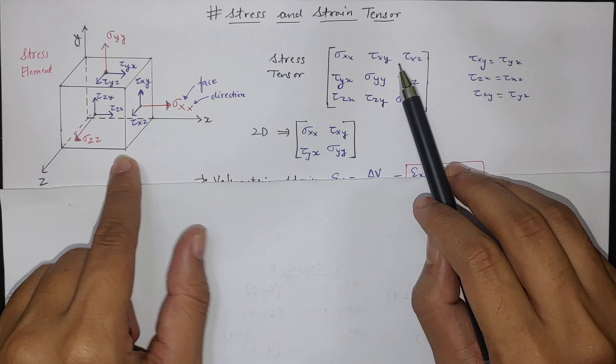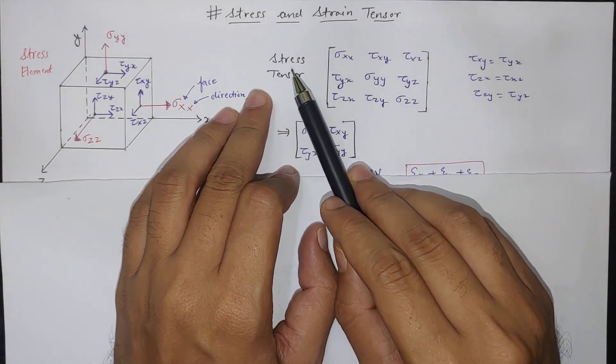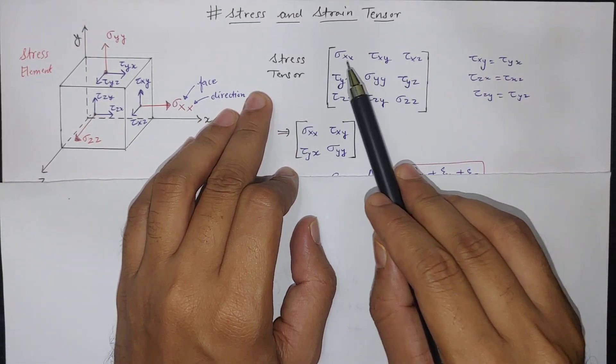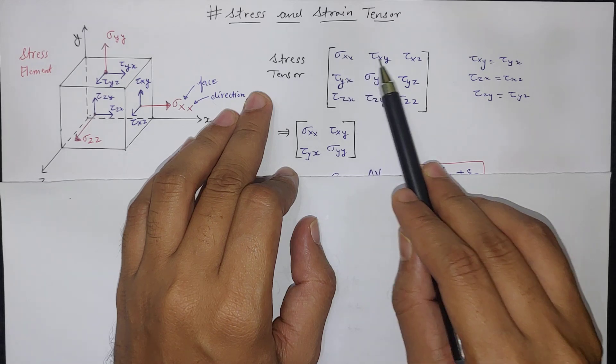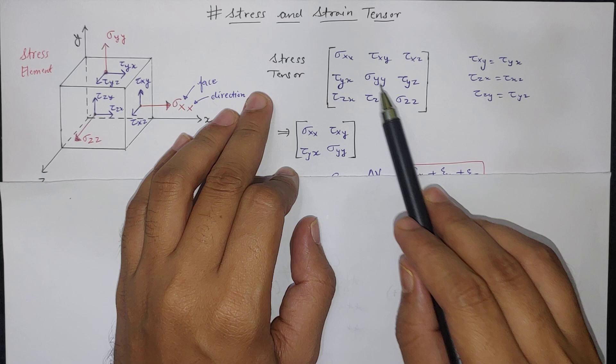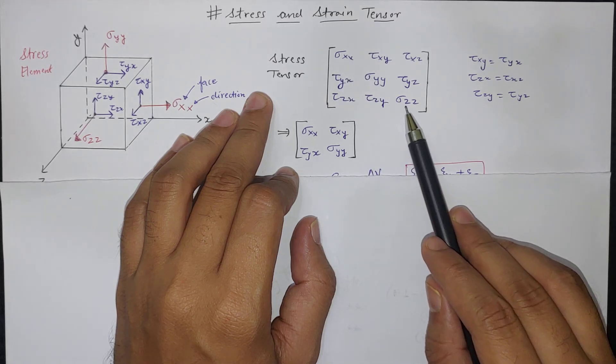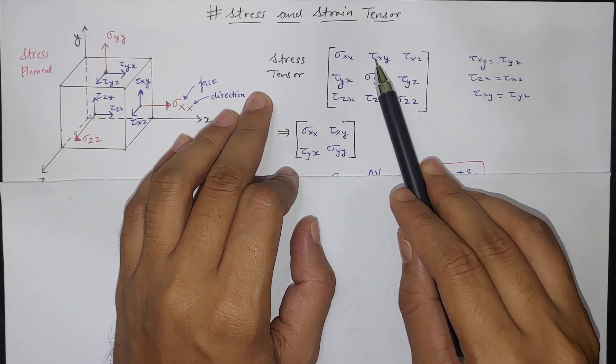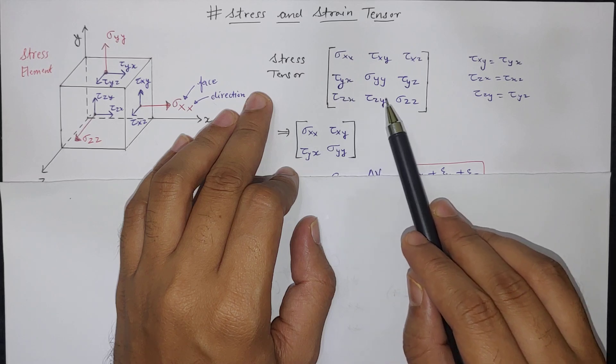Similarly there are two shear stresses in this plane and two shear stresses in this plane. So there are total nine forces which are acting and we have to define stress tensor like this. So first we define X face and XYZ direction then Y face and then Z face. So in diagonal we define normal stresses and on other six phases we define shear stresses.